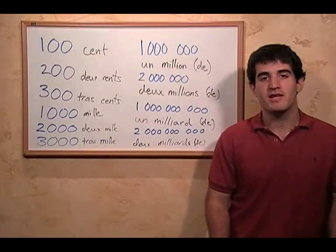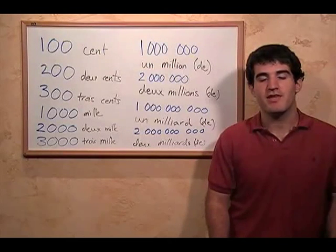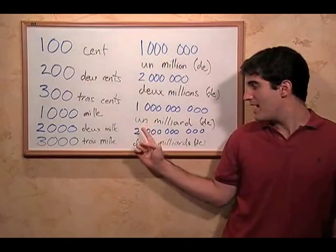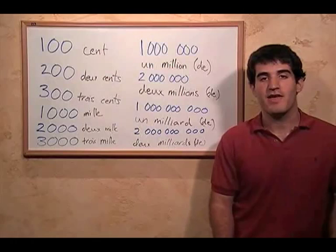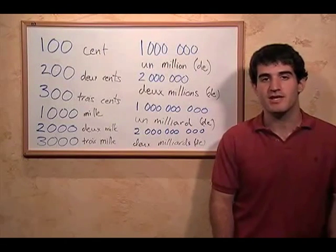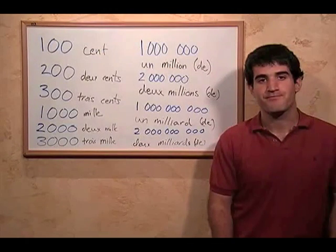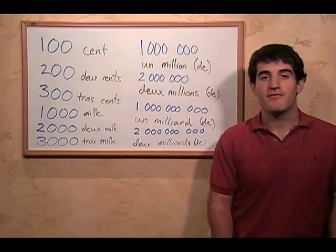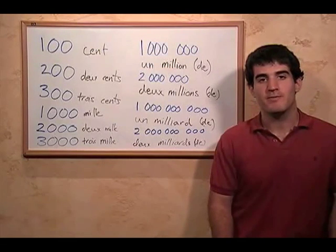For a billion, it's un milliard. And like for a million, we do say that un — so we get un milliard. And then after that, we put the number of billions we're talking about. So two billion is deux milliards, and so on. And for a million and a billion, we do write an s at the end when it's more than one.